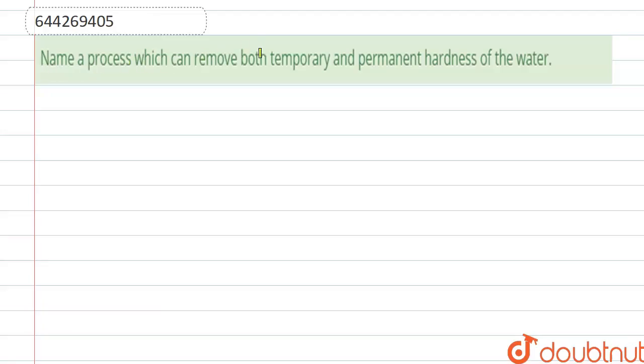Hello everyone. Here the question is: name a process which can remove both temporary and permanent hardness of water. First, we need to know about what is temporary and what is permanent hardness.